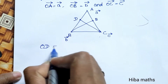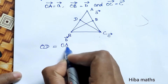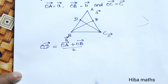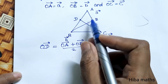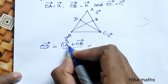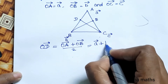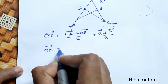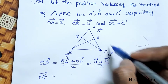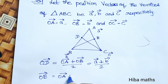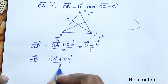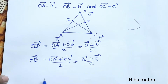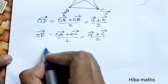Since D is the midpoint of AB, OD vector equals OA vector plus OB vector divided by 2, that is A vector plus B vector divided by 2. Since E is the midpoint of AC, OE vector equals OA vector plus OC vector divided by 2, that is A vector plus C vector divided by 2. Now we use these values to prove the LHS.